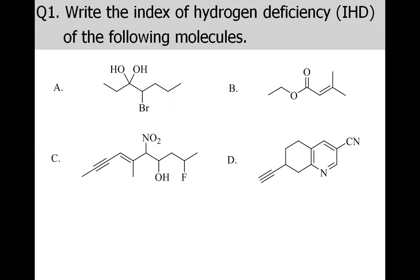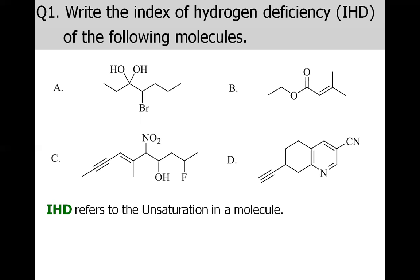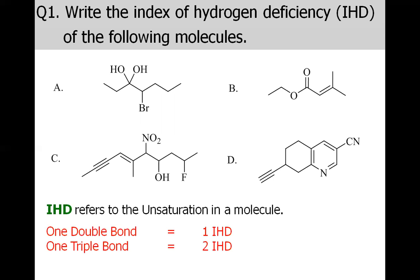Before solving these questions, let us recall what IHD is. Basically, IHD refers to the unsaturation in a molecule. This unsaturation may occur because of a double bond, a triple bond, or a ring. One double bond gives one IHD; one triple bond gives two IHD because it has two pi bonds; and one ring gives one IHD.